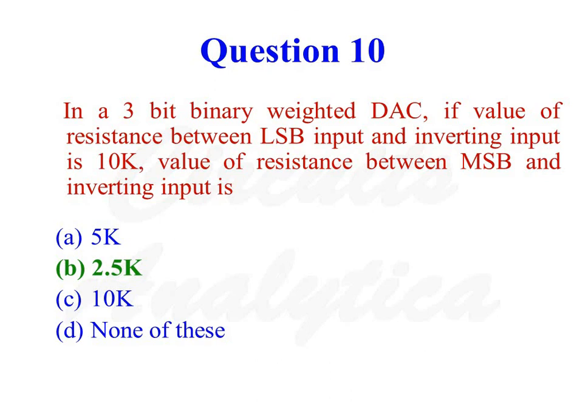In a 3-bit binary-weighted resistor digital to analog converter, if the value of resistance between LSB input and inverting input of the op-amp is 10k, value of resistance between MSB input and inverting input is 2.5K. So the correct answer is option number 2.